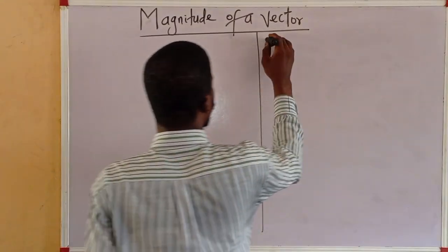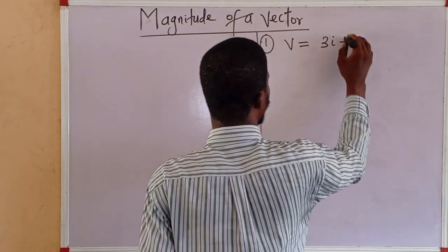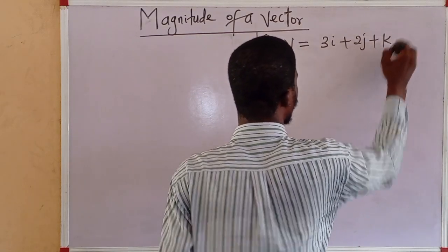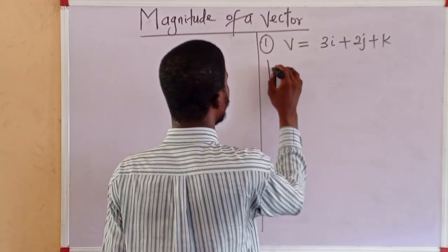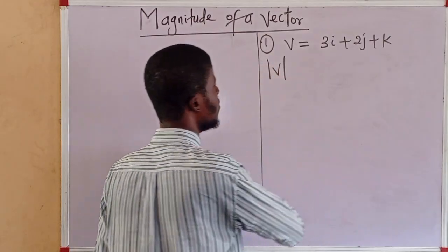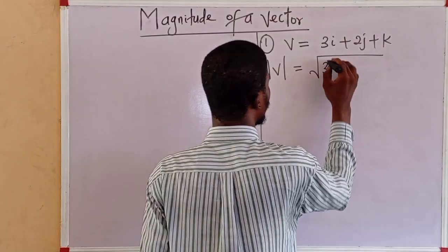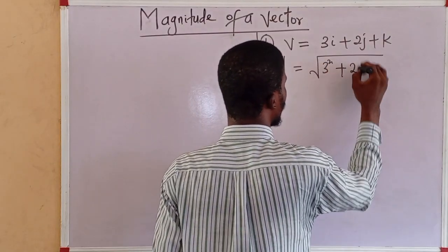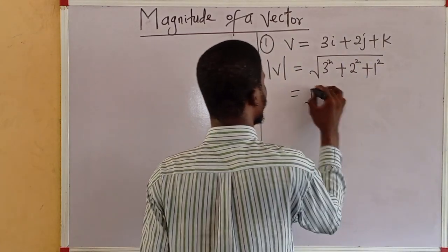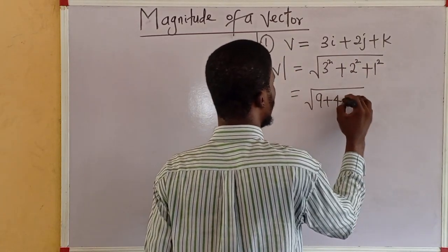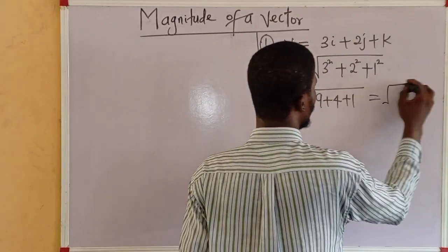Say, for example, V is equal to 3i plus 2j plus k. We have to determine the magnitude of this vector, which is the modulus of V, is the positive square root of 3 squared plus 2 squared plus 1 squared. And we have 9 plus 4 plus 1, which is 14. So, we have root 14. This is the modulus of the vector.